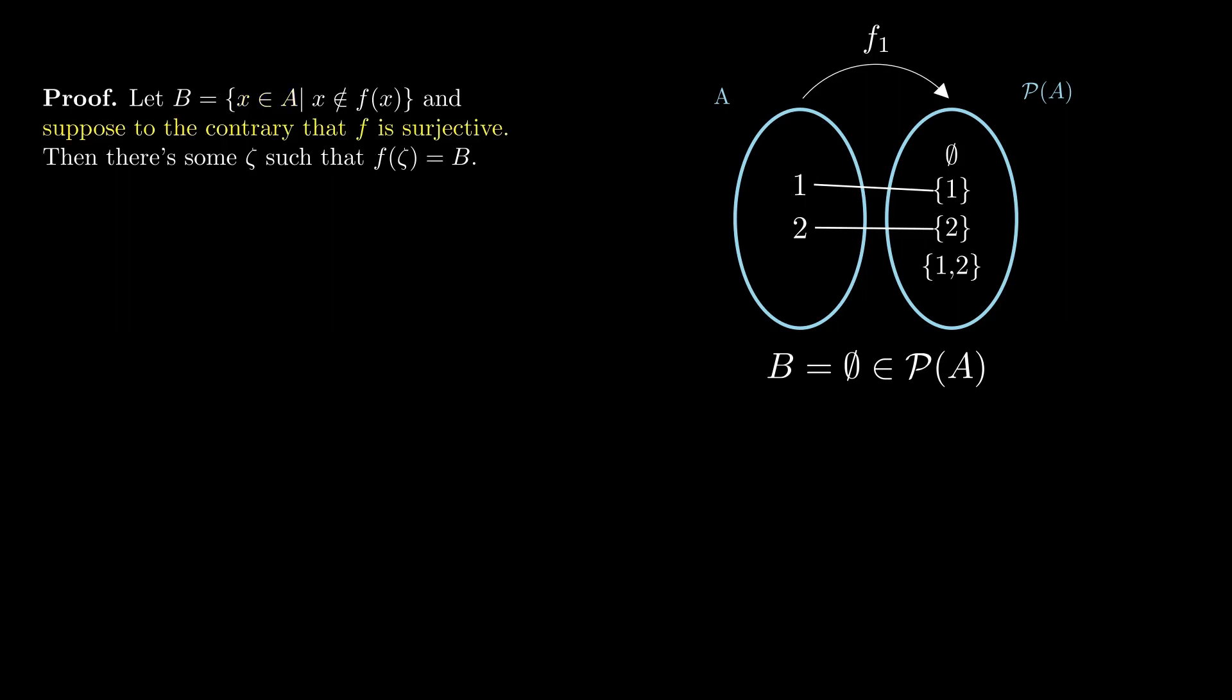Since we assumed that F is a surjection, it follows from its definition that there is some element in A such that F of this element is the set B, since B is a subset of A. And we can call this element zeta. If zeta is an element of B, then, according to the definition of the set B,